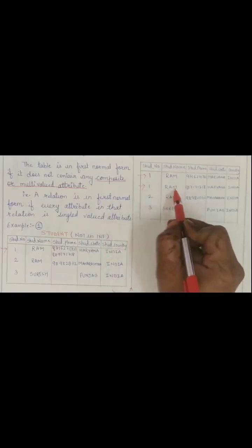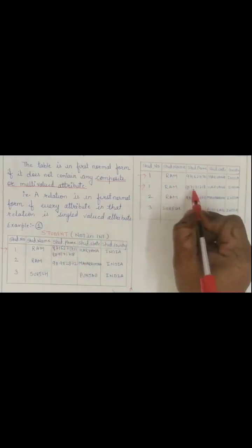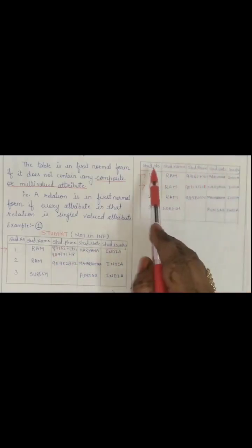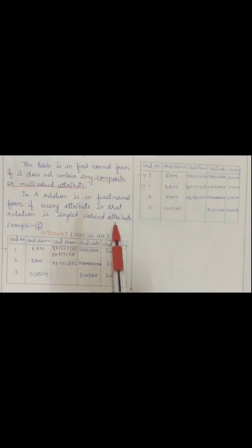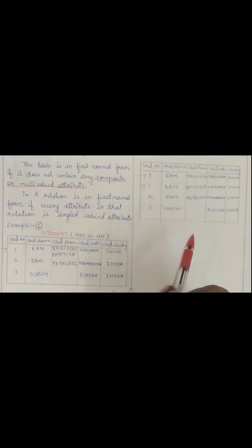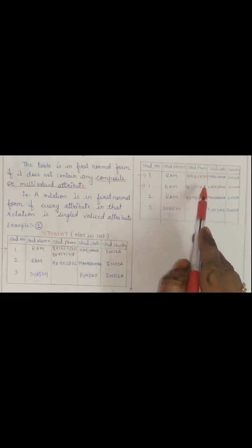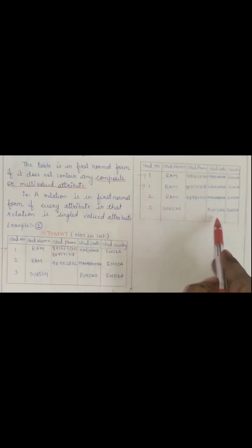Similarly, the second entry is again 1, RAM with the second phone number written over here with Haryana and India. This is how we have converted this student table into 1NF. We have made all the attributes single-valued attributes. None of the attributes is multi-valued over here. That's why we say this conversion is in 1NF.